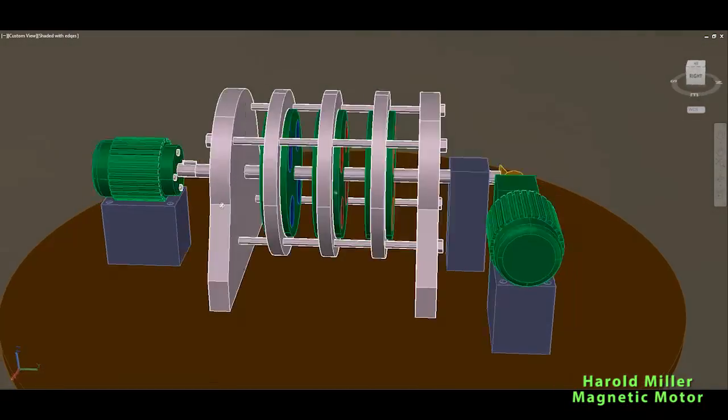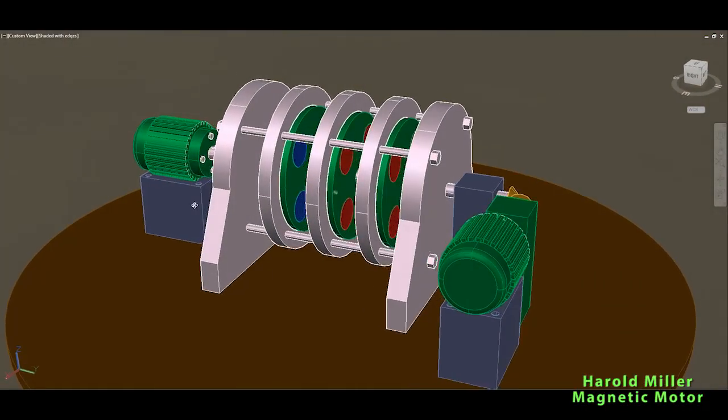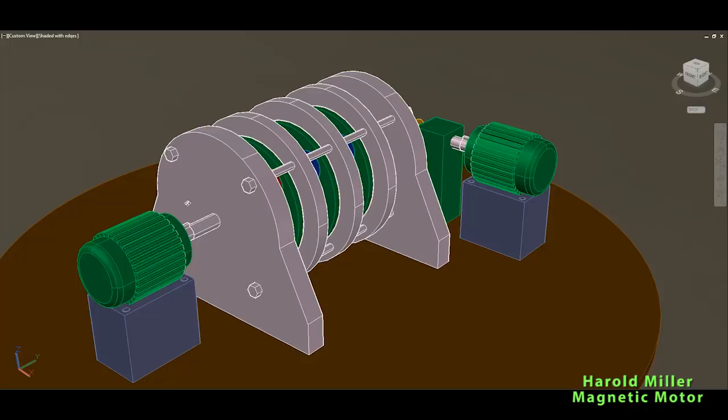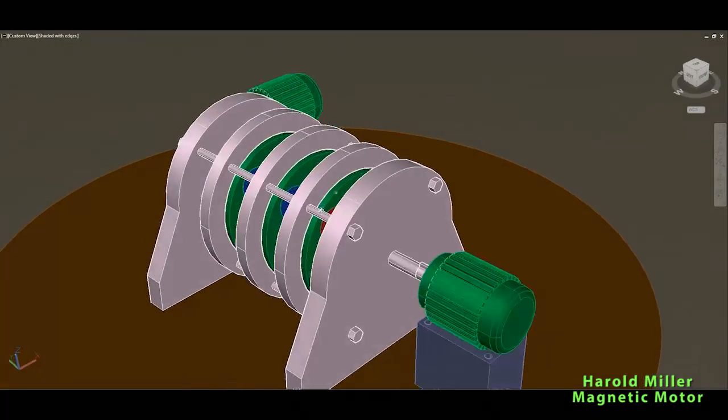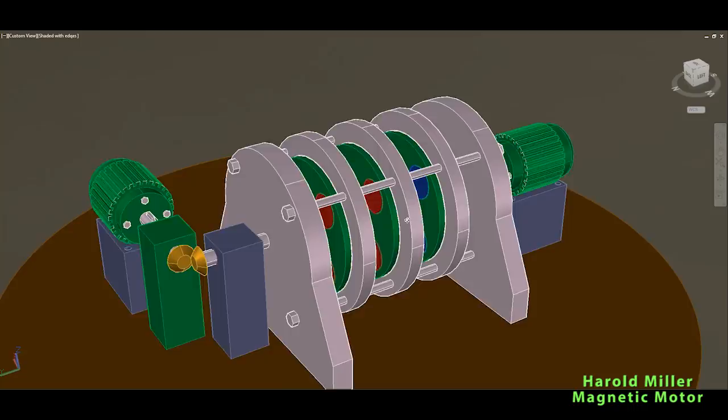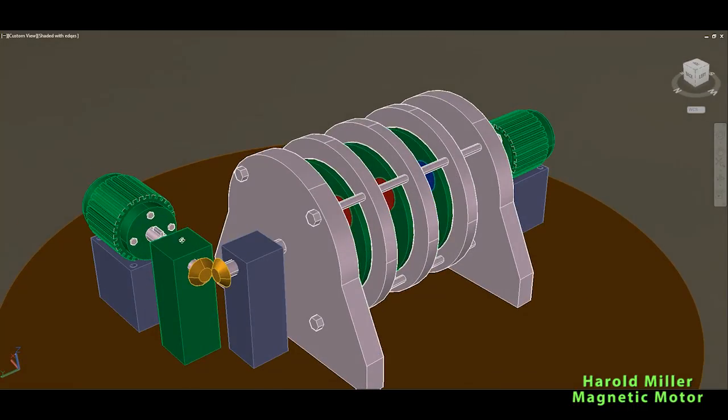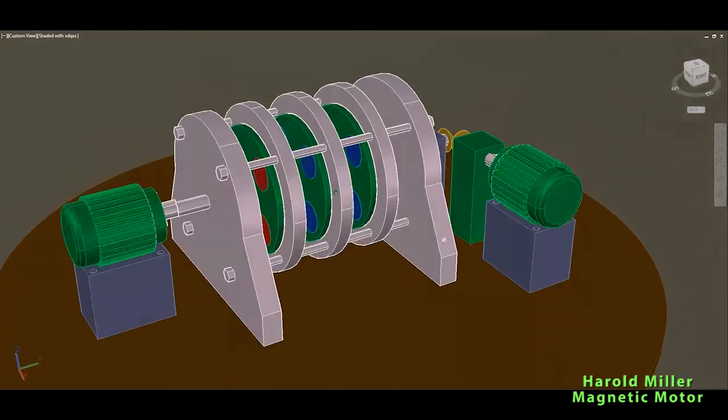This device transfers reciprocating to rotational motion on this part over here. This component will be our drive motor, which should be electronically controlled from outside to rotate this main shaft left and right.